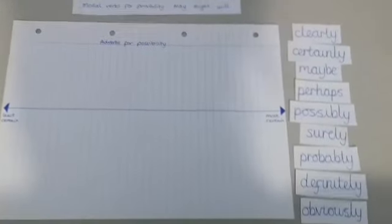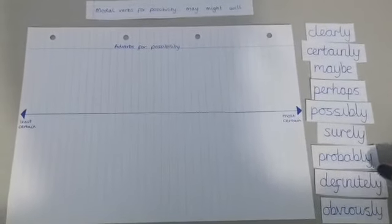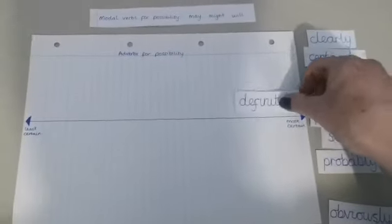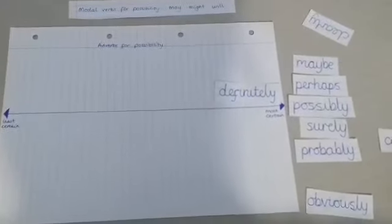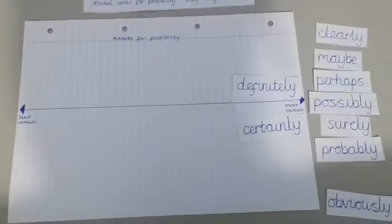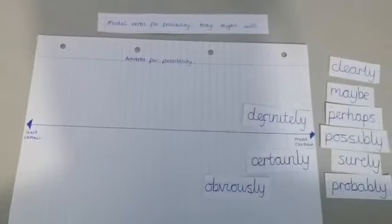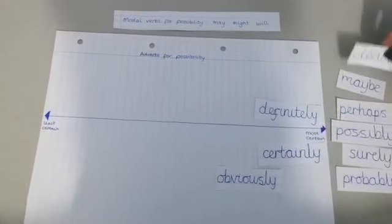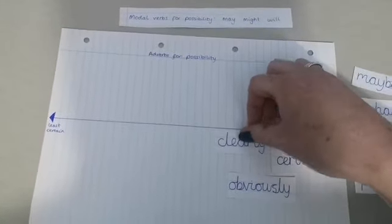I'm going to order them on my scale here from least certain to most certain — there's no right or wrong answer. The words that stick out to me straight away are definitely and certainly; they're probably our strongest adverbs and have a really strong sense of certainty. Obviously is quite a strong one too. Clearly — something is clearly going to happen — is also quite a strong adverb.